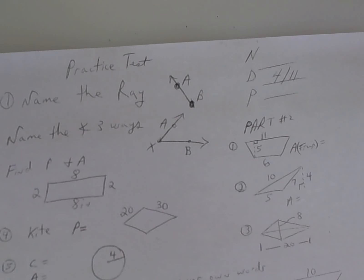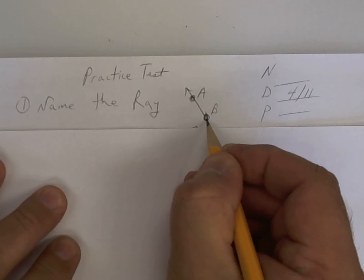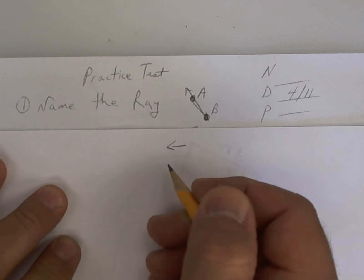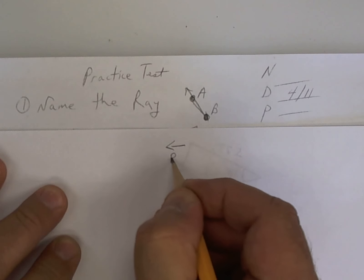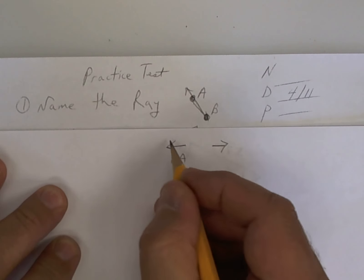All right, here we go. It says name the ray. The ray always starts at the endpoint. Some kids are going to put the arrow this way. It starts at B, but that's wrong. The arrow always points this way, regardless.